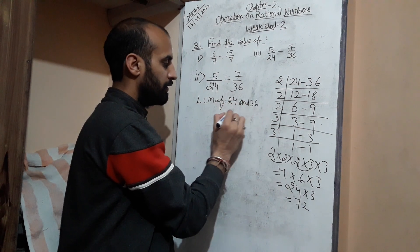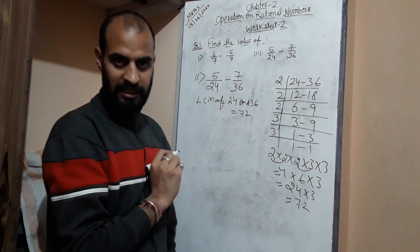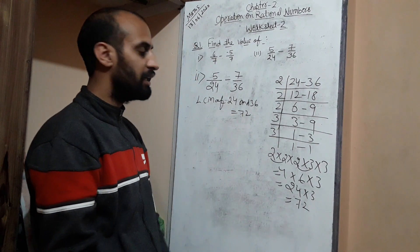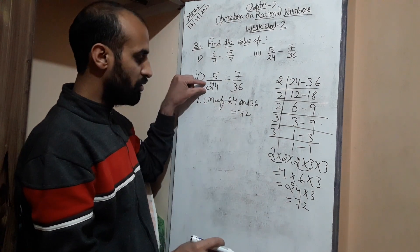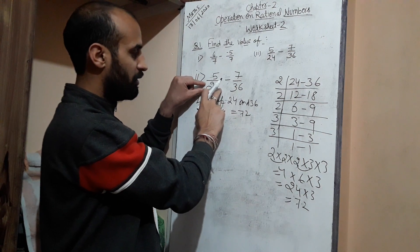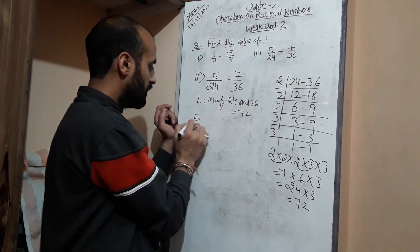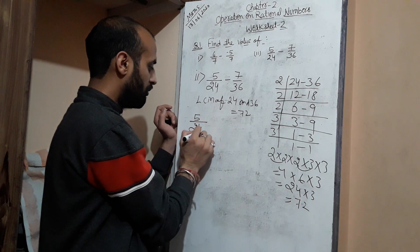This is very important to take LCM. After taking LCM, your work is to make the denominator equal to 72. Here you can see we have 24. That means what number is required to make it 72? Which is clear from here: you need 3. The same number you need to multiply in the numerator as well as denominator.